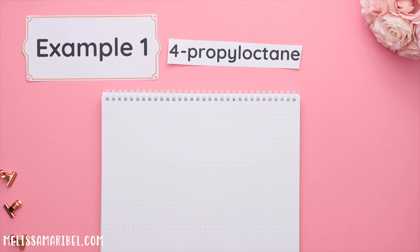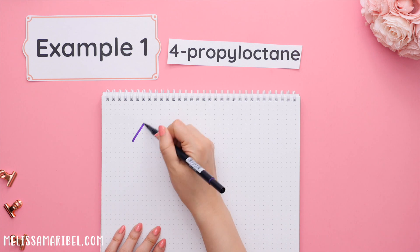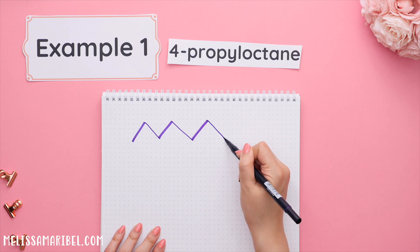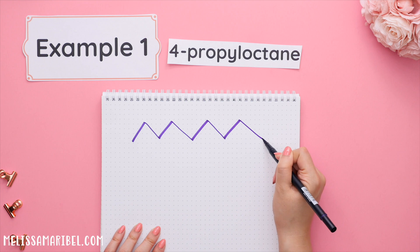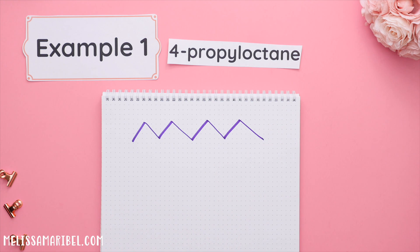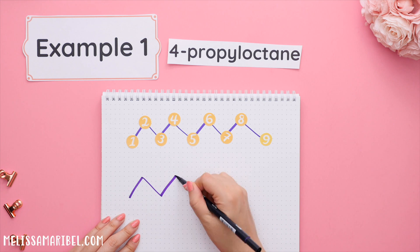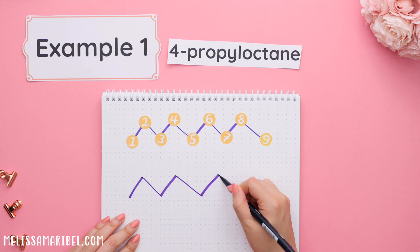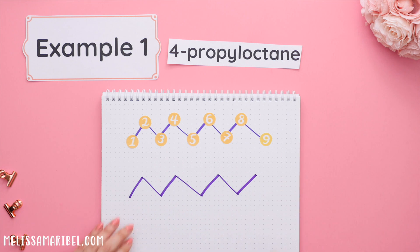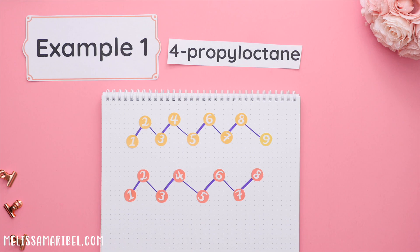Say we wanted to draw only eight carbons. If we counted to eight when drawing — one, two, three, four, five, six, seven, eight — that actually gives you nine carbons. But if we count to seven — one, two, three, four, five, six, seven — that gives us eight carbons, which is what we wanted.